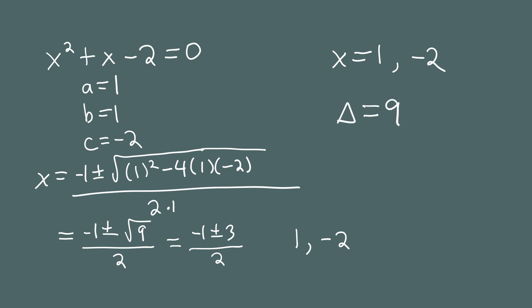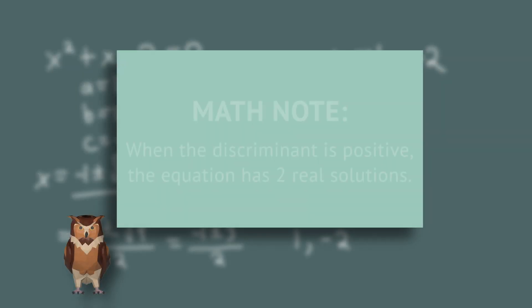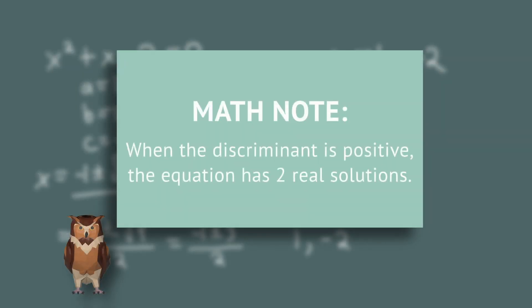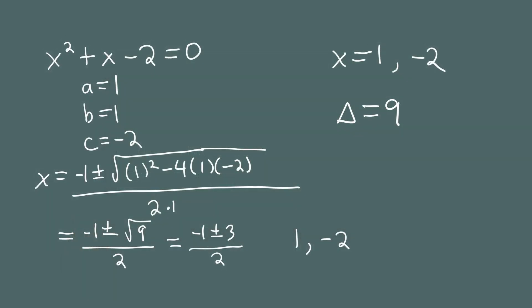What's important in this case is the discriminant is positive, and the two solutions to this quadratic equation are real numbers — and in fact, they're different real numbers.